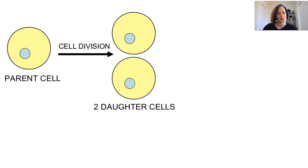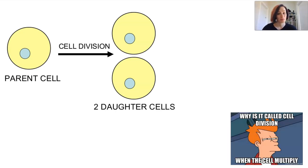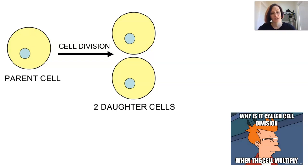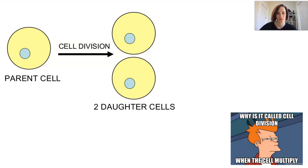Remember that when cells divide they're actually multiplying. They divide to create more cells, and the parent shares itself by replicating its DNA and sharing its content between its two new daughter cells — which are actually identical copies of the parent, not unique.